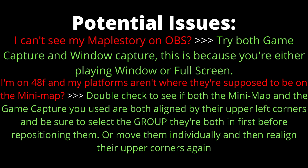After you're done setting everything up, if Floor 48 platforms don't seem to be where they are on the minimap, double-check to see if both the minimap and the game capture are aligned by their upper left corners. Be sure to select the group they're both in first before repositioning them, or move them individually and then realign their upper left corners again.